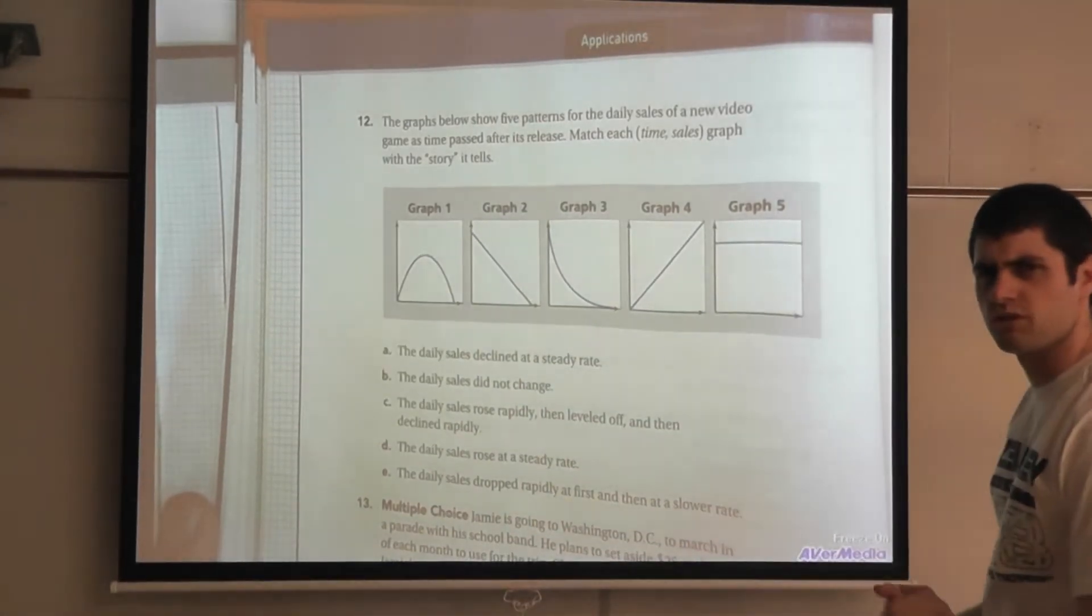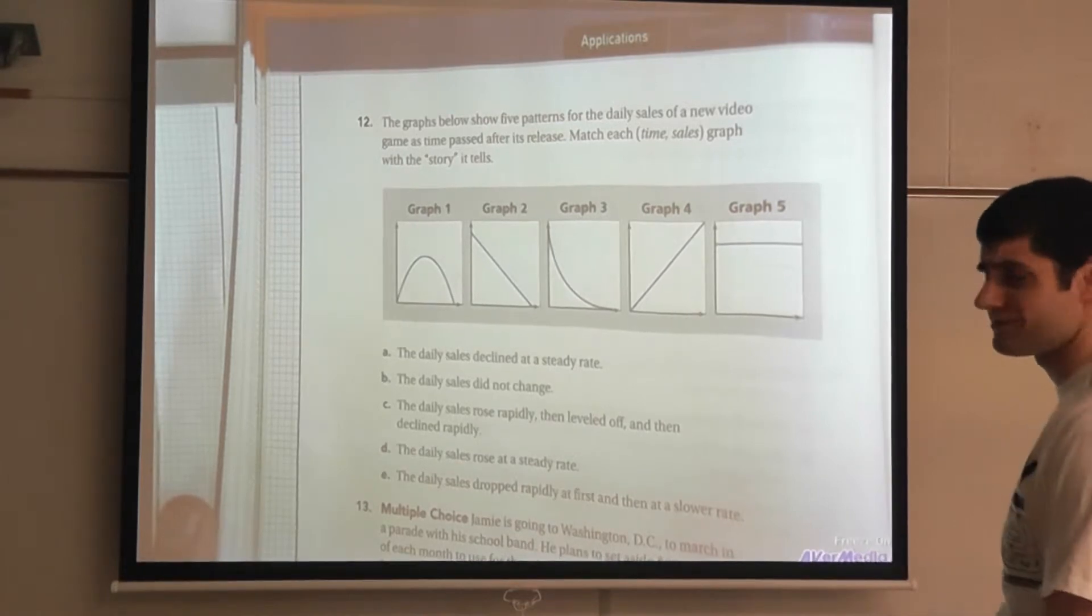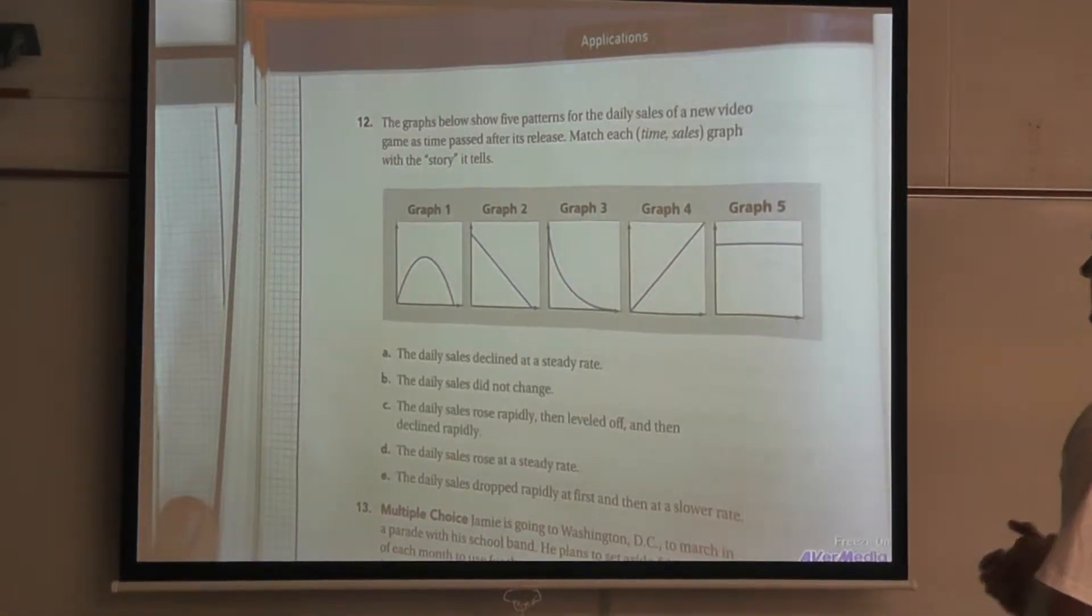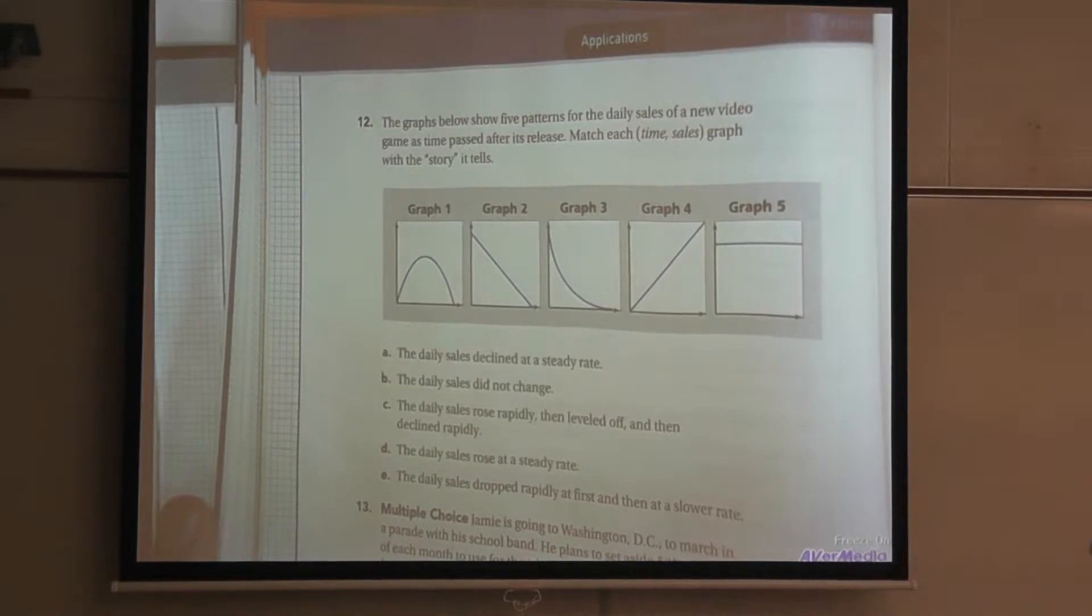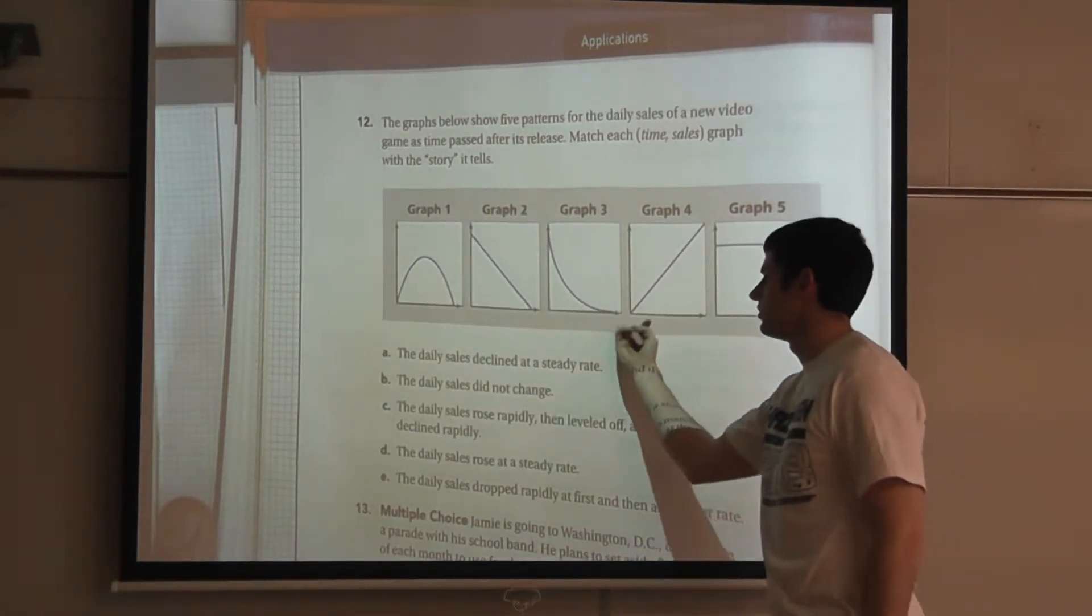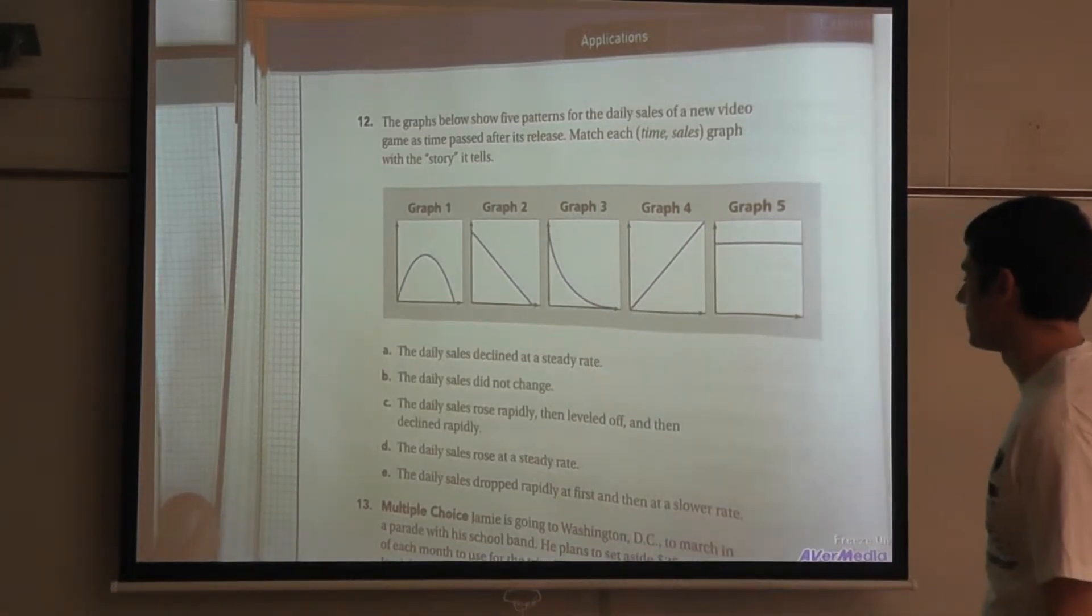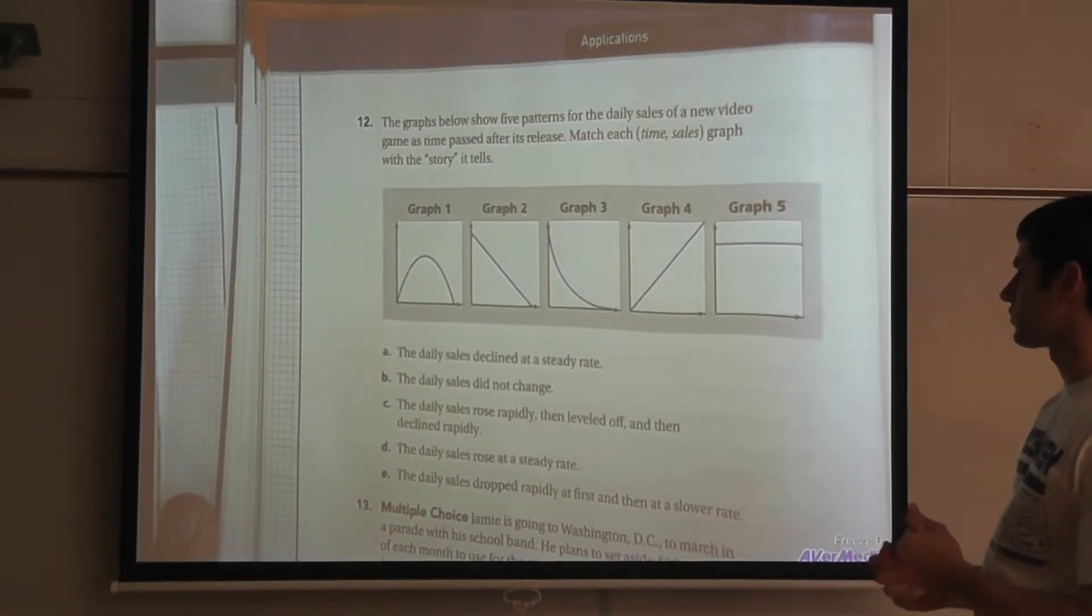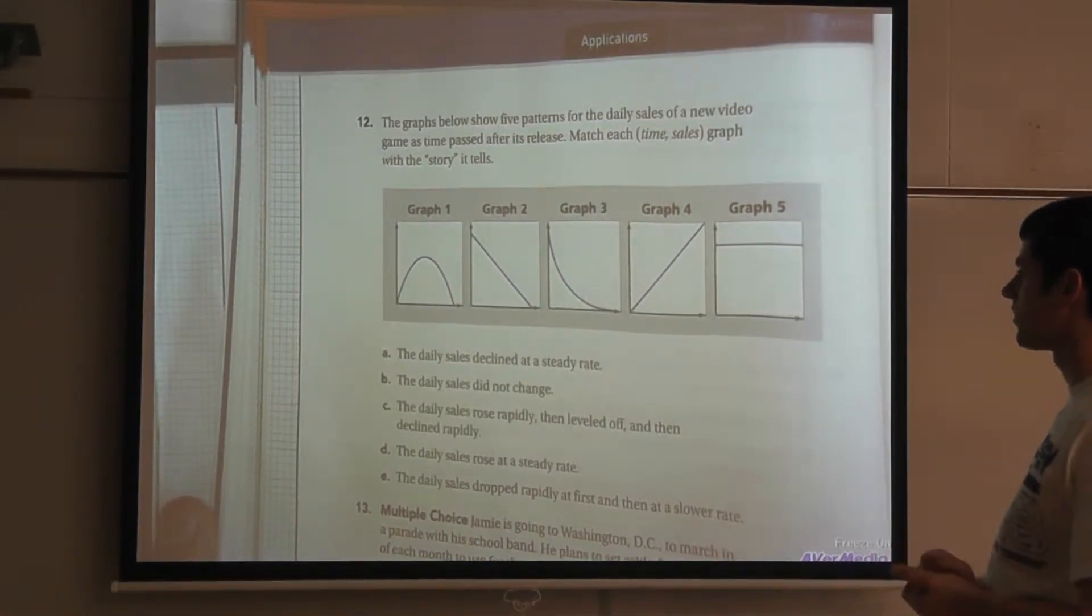So C is going to match with graph 1. All right, good. We're three for three so far and you guys are two for two at home. D says the daily sales rose at a steady rate. Well, I'm down to graph 4 and graph 3. So I'm still looking at these two and I have the daily sales rose at a steady rate and I have the daily sales dropped rapidly at first and then at a slower rate.